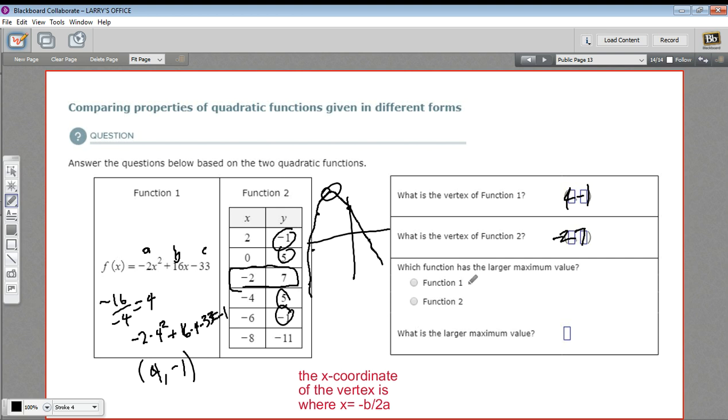So the next question is, which function has the larger maximum value? And it's useful to know whether your parabola is open upward or downward. In this case, we can tell this one opens downward because we sketched it. So our maximum value is going to be right here at the vertex. This parabola function 1 also opens downward. We know that because it's got a negative coefficient of the x-squared term. If a is negative, it's going to be a downward opening parabola.